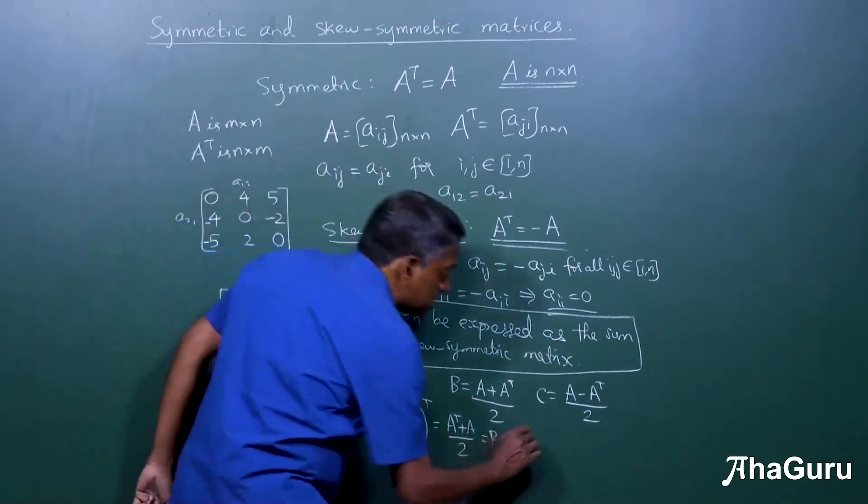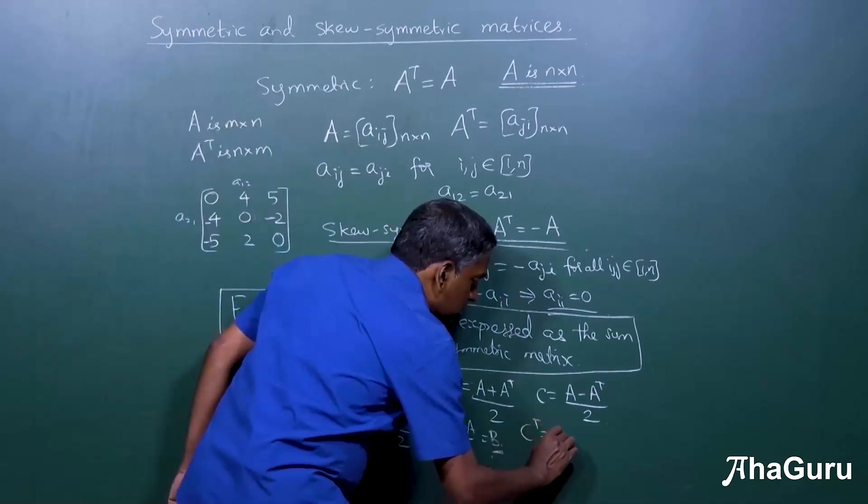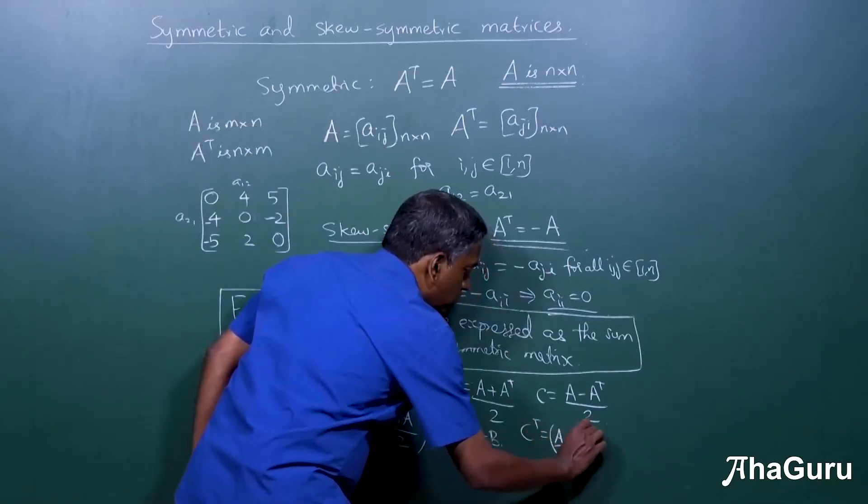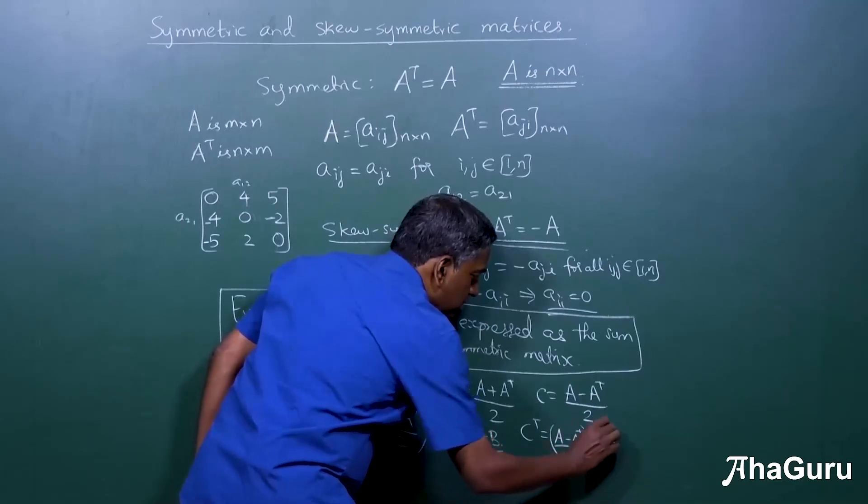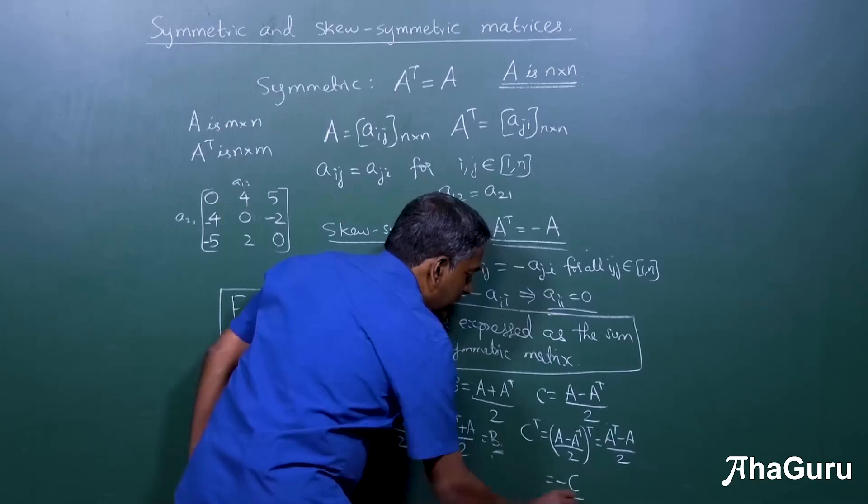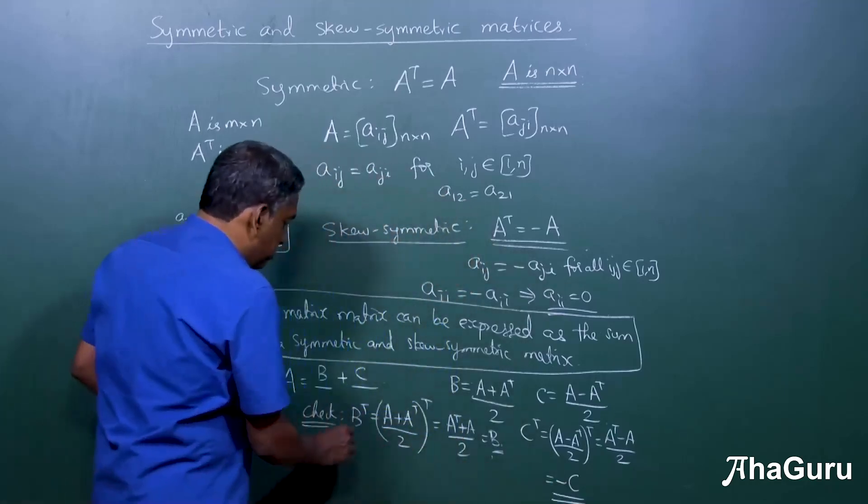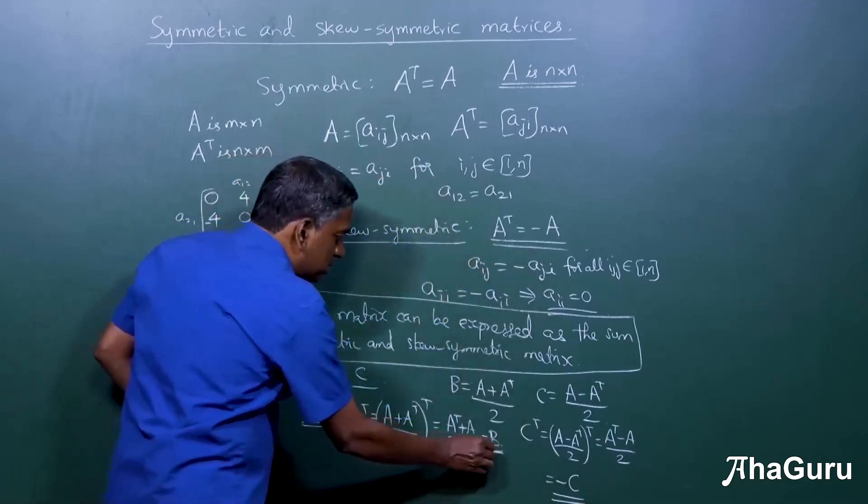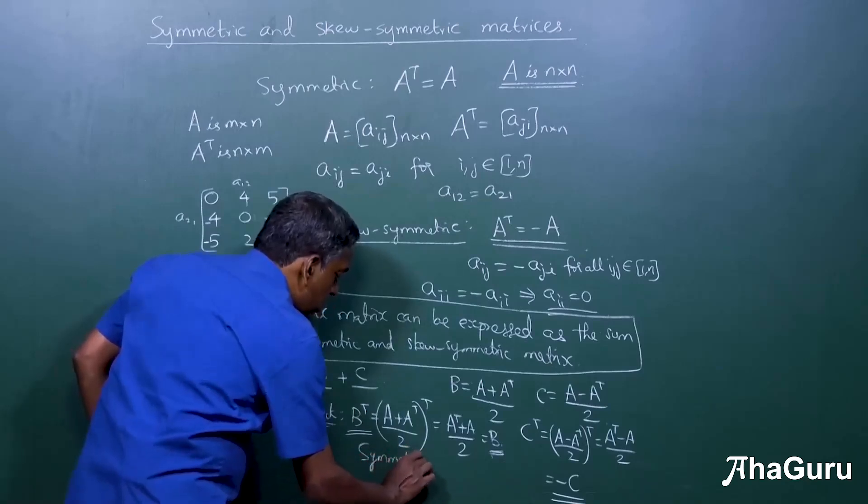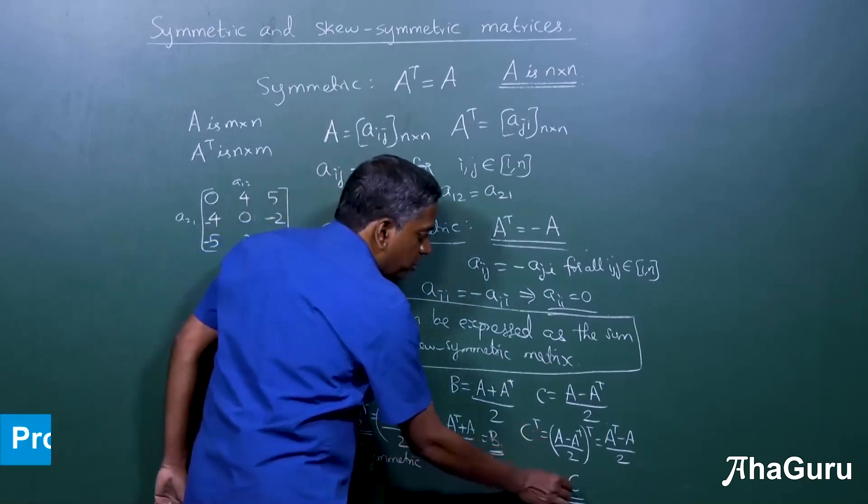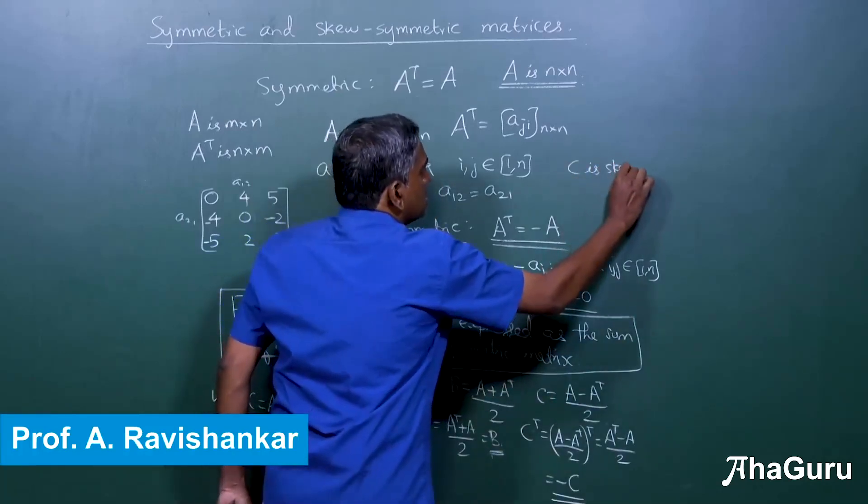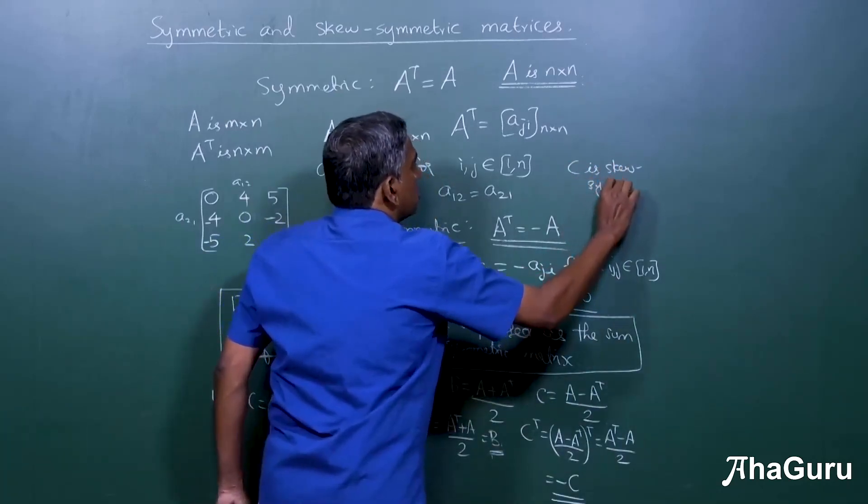Next, what is C transpose? C transpose is A minus A transpose by 2, the whole transpose, which will be A transpose minus A by 2, which will be minus C. So, we find that B transpose equals B. This means B is symmetric. Similarly, C transpose is minus C, which means C is skew-symmetric.